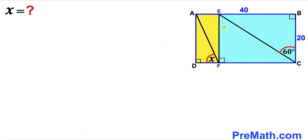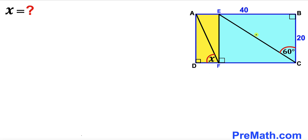Welcome to pre-math. In this video we have this blue rectangle and this yellow rectangle put together as shown in the diagram, such that side length BC is 20 units, side AB is 40 units. Diagonal EC belongs to this blue rectangle, and AF is the diagonal for this yellow rectangle.